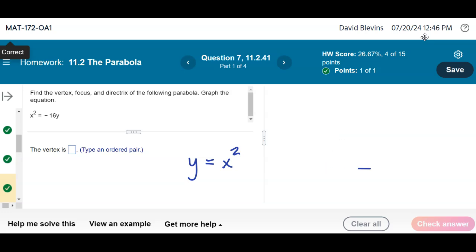When x is squared, it opens up and down. When y is squared, it opens left and right. So this is similar to the one we've seen before this class started, so this one's going to open up and down.